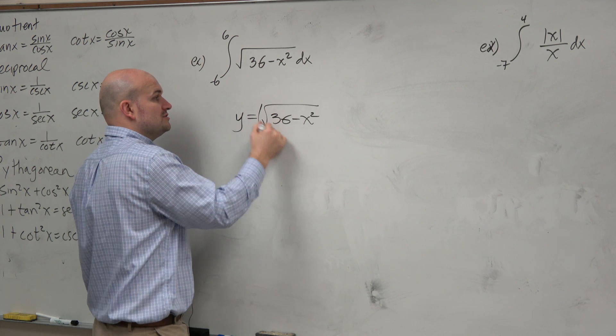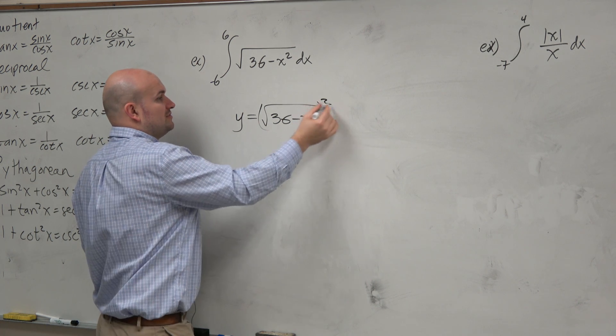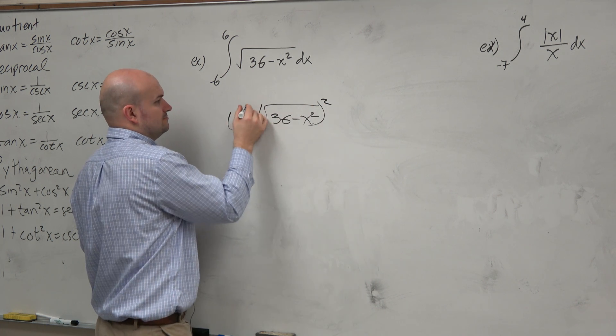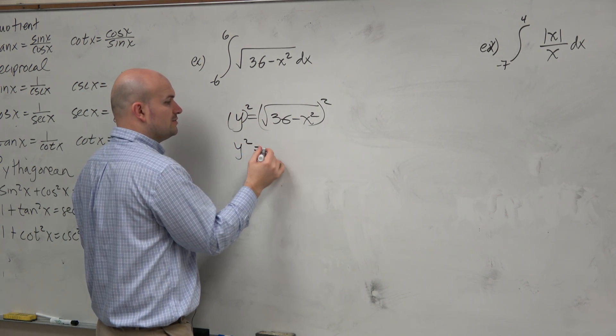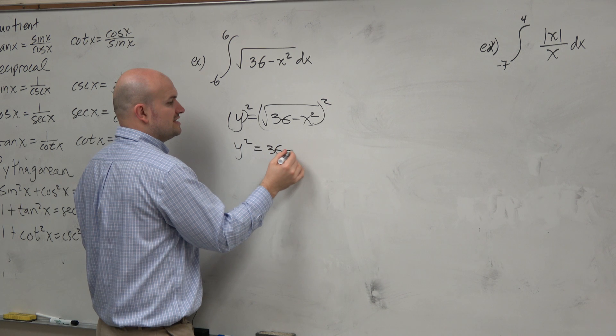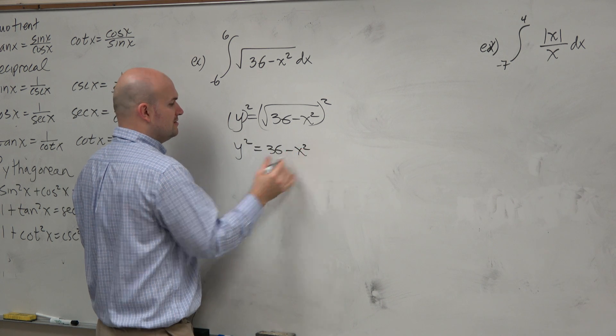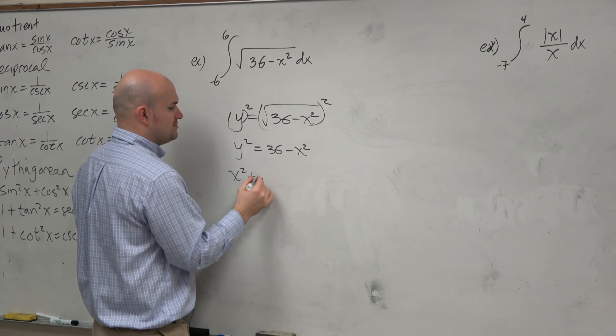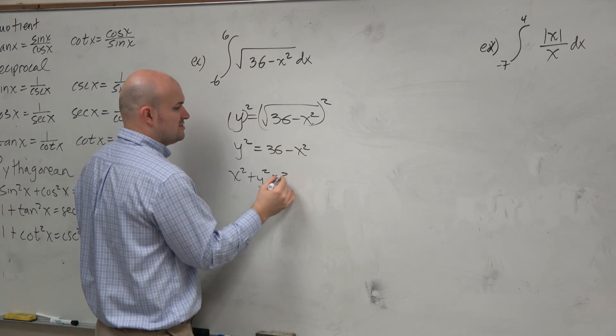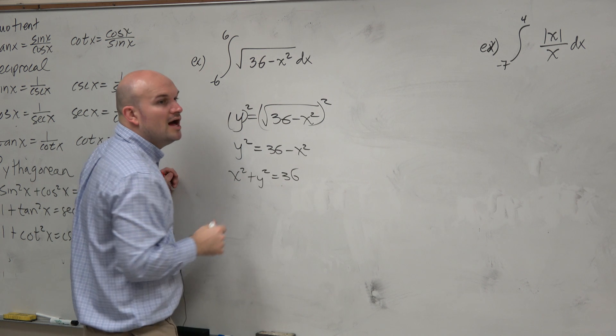I can also square both sides. y squared equals 36 minus x squared. And then I can add the x squared to the other side: x squared plus y squared equals 36.